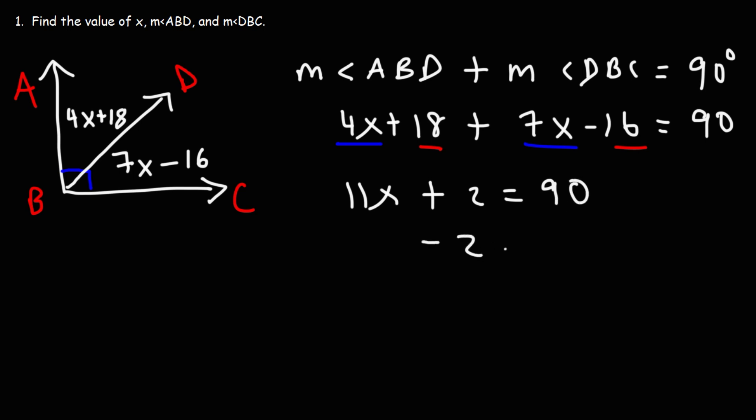Next, we could subtract both sides by 2. Bring down the 11X. 90 minus 2 is 88. And then we could divide both sides by 11. And we get that X is 88 divided by 11, which is 8.